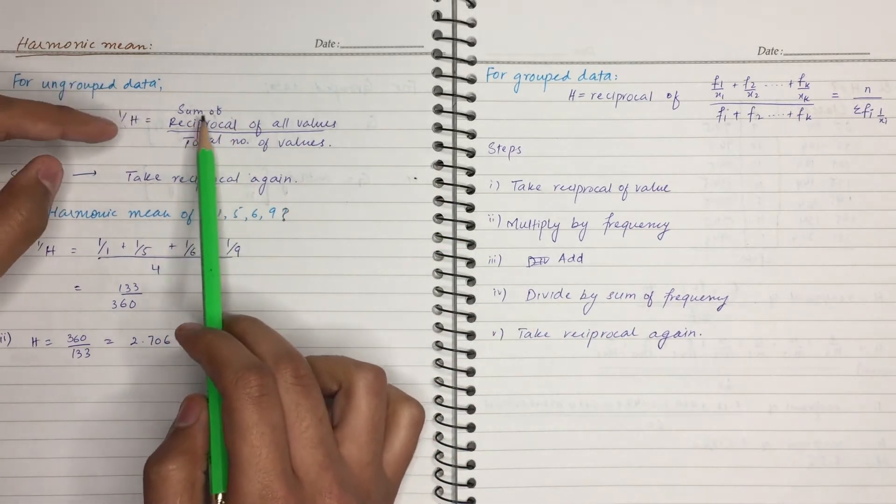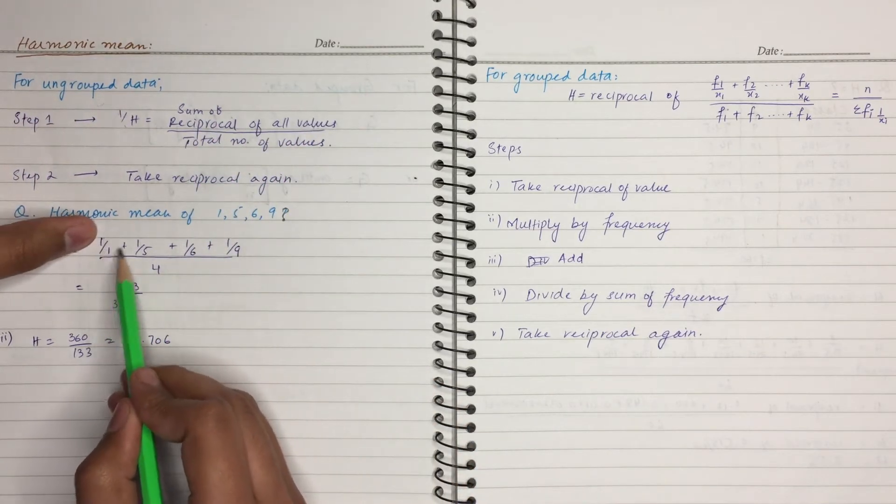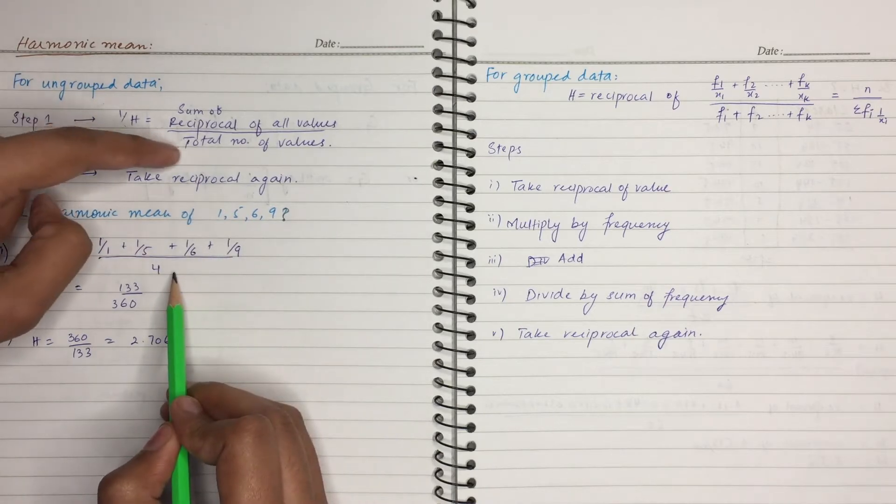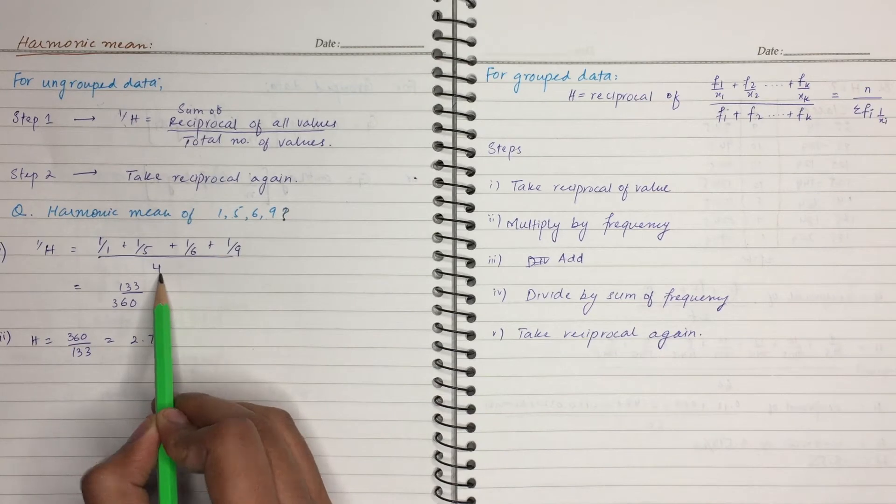First of all, you have sum of reciprocal of all values. Reciprocal of all values and its sum divided by total number of values. 1, 2, 3 and 4. Four values are our values.